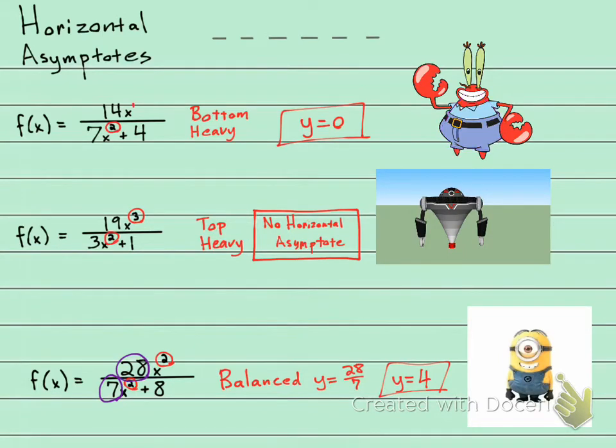If you're thinking about a horizontal asymptote, we're thinking about going this way. If you look at where his belt line is, it kind of looks like a big zero. So if it's bottom-heavy, your horizontal asymptote is going to be at y equals zero.